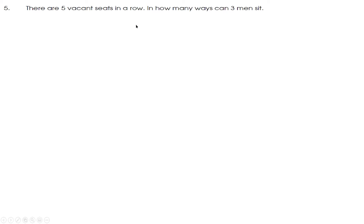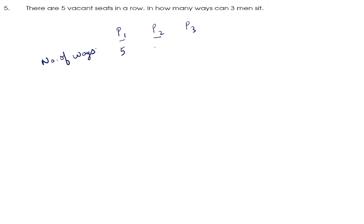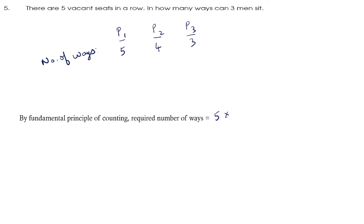Next question: there are 5 vacant seats in a row — in how many ways can 3 men sit? Here person 1 can occupy one of the 5 vacant seats, so there are 5 options. After person 1 has occupied one seat, 4 seats remain, so person 2 has 4 options and person 3 has 3 options. By the Fundamental Principle of Multiplication, the required number of ways is 5 into 4 into 3, equal to 60 ways.